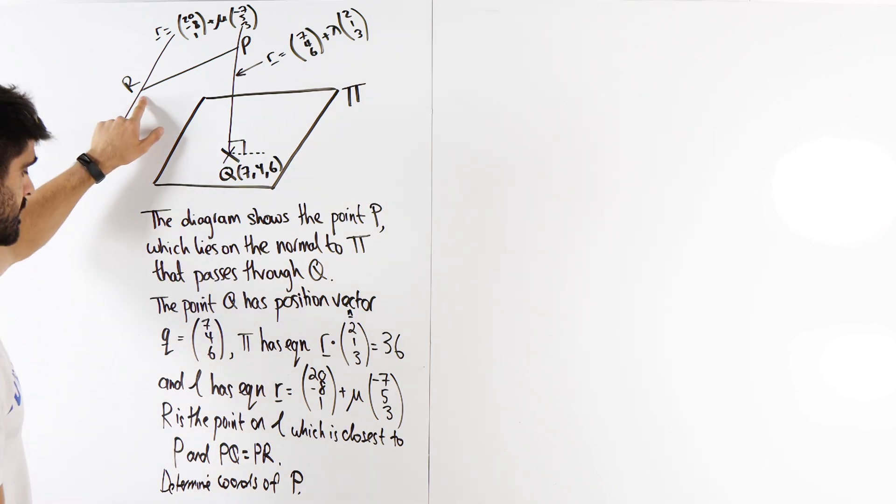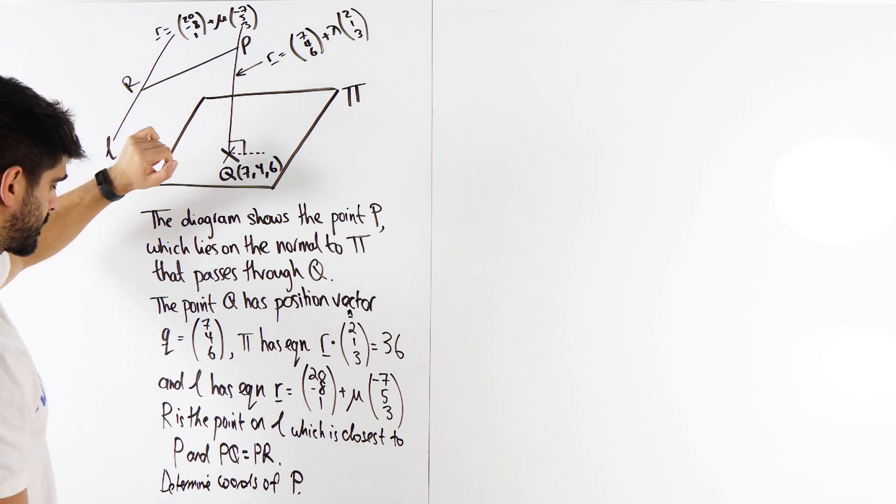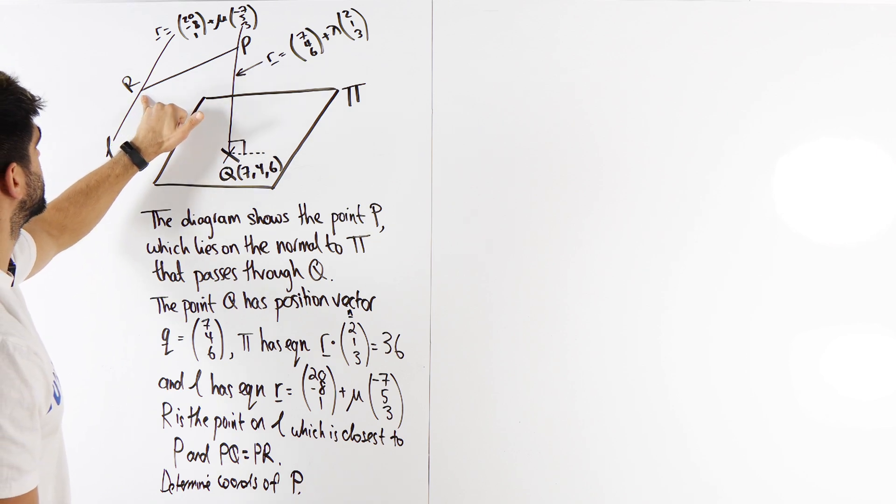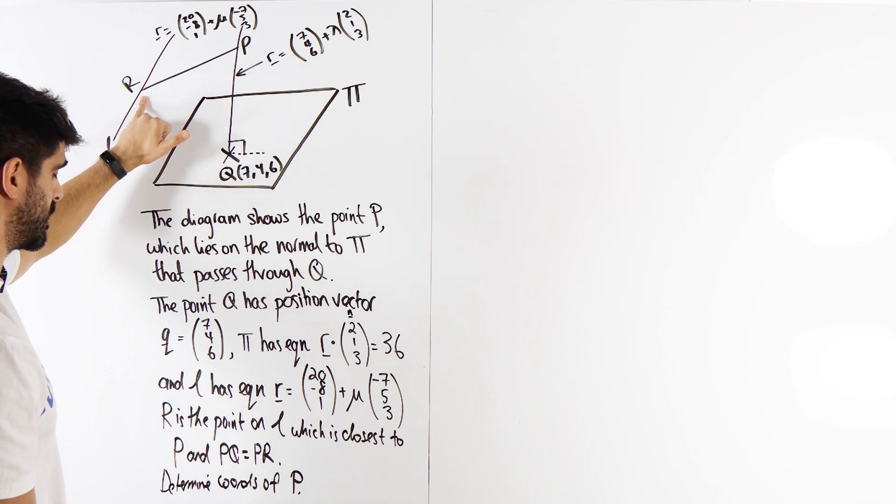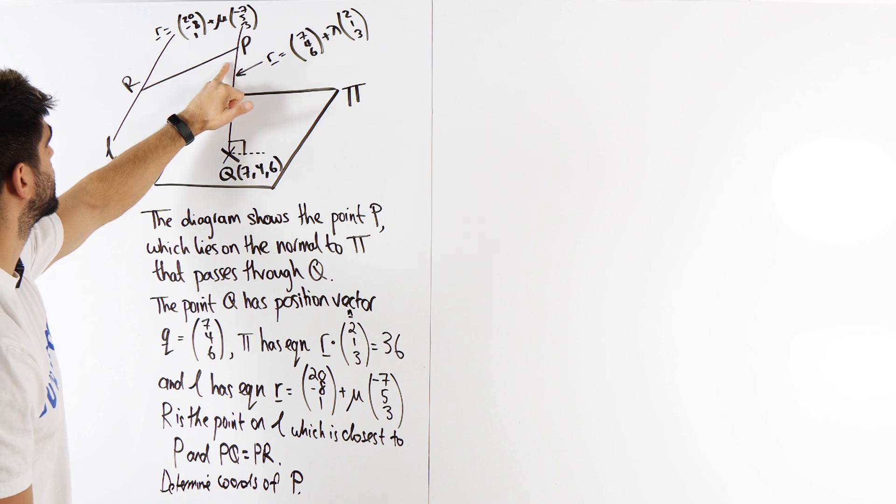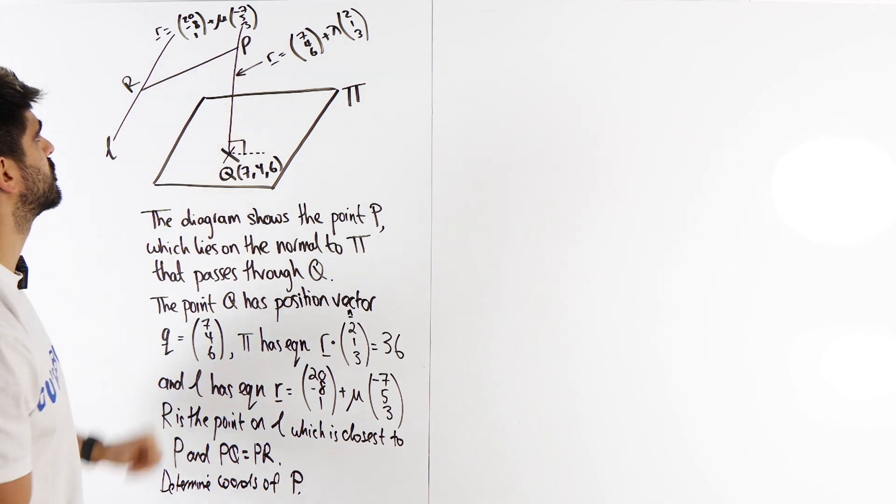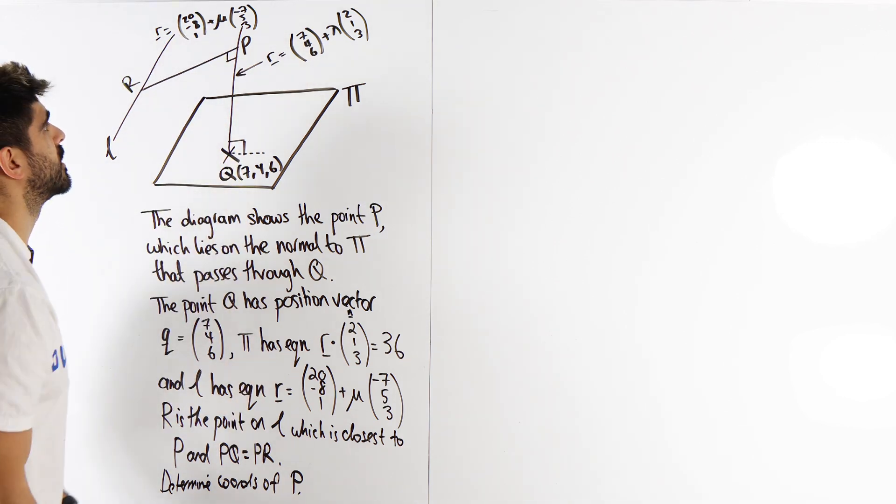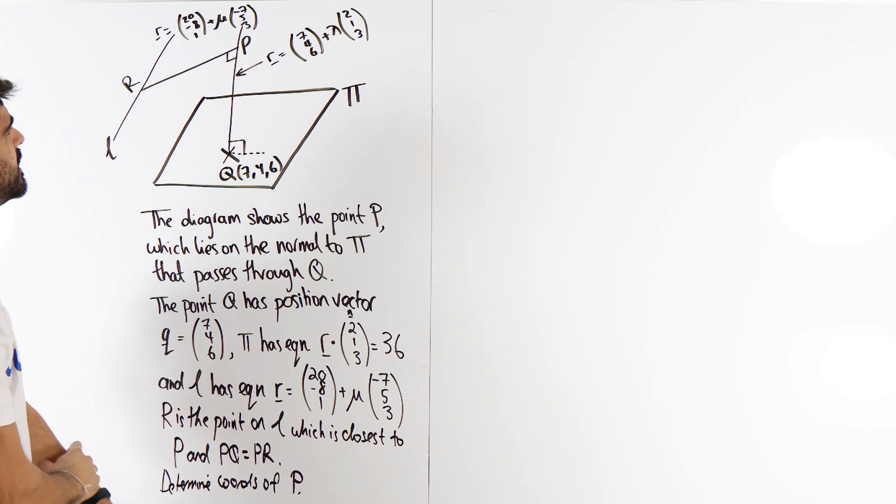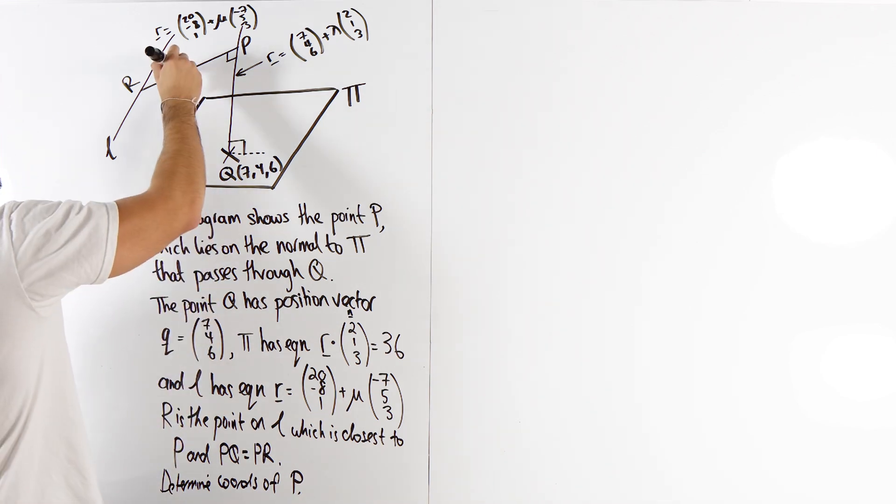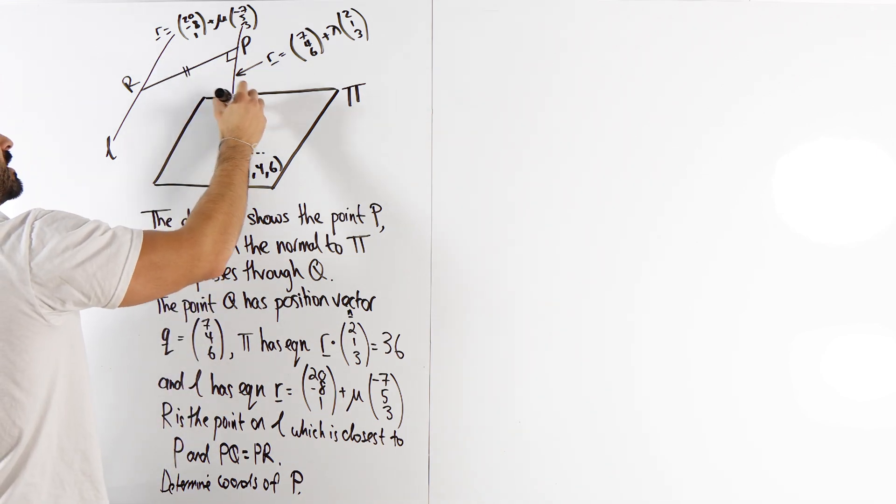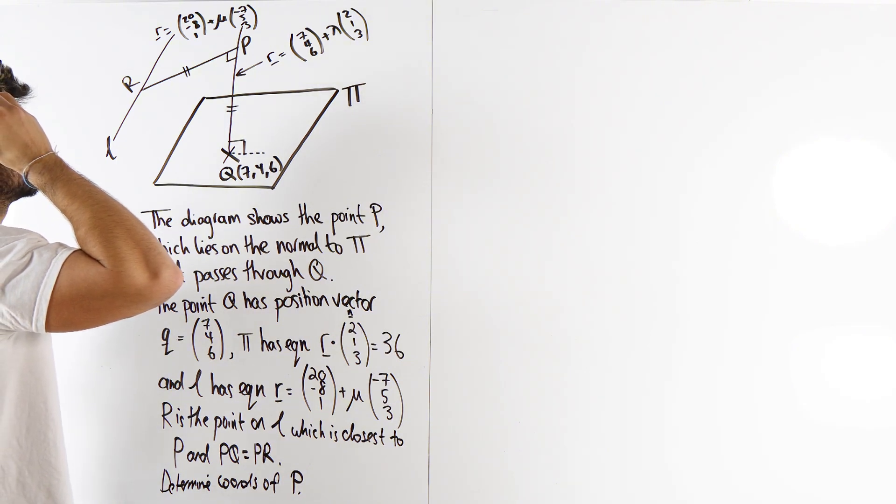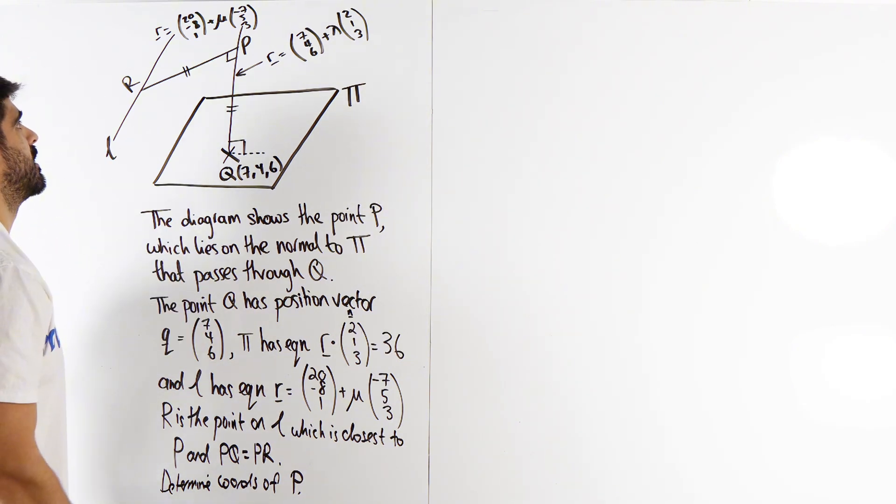R here is the point on L which is closest to P, meaning this direction vector is 90 degrees. It makes a 90 degree angle here. And PQ equals PR. Is that relevant? Not really sure to be honest. But maybe it is.